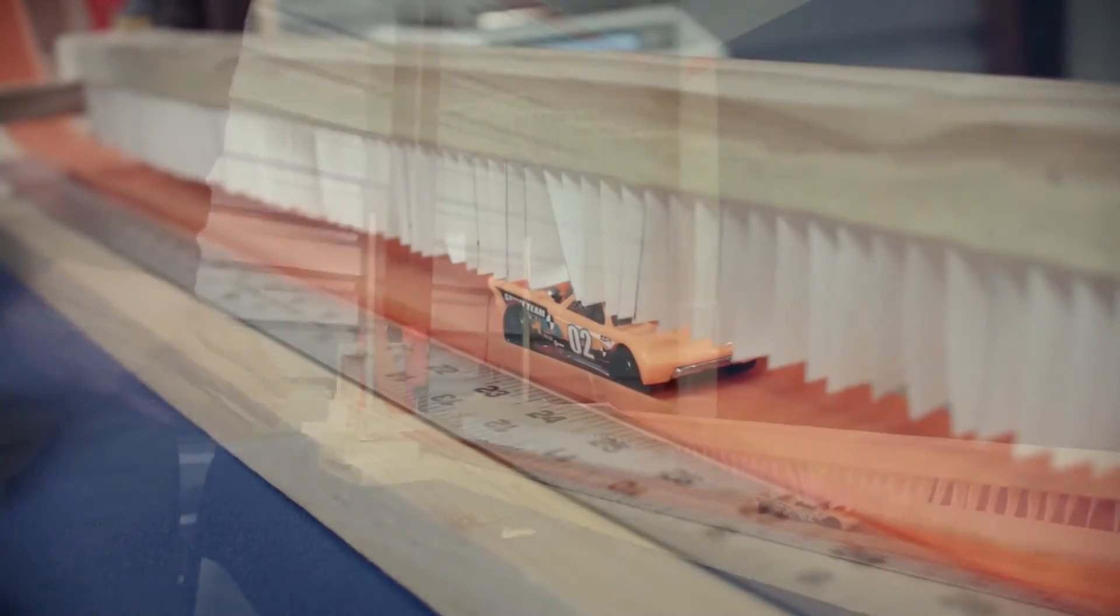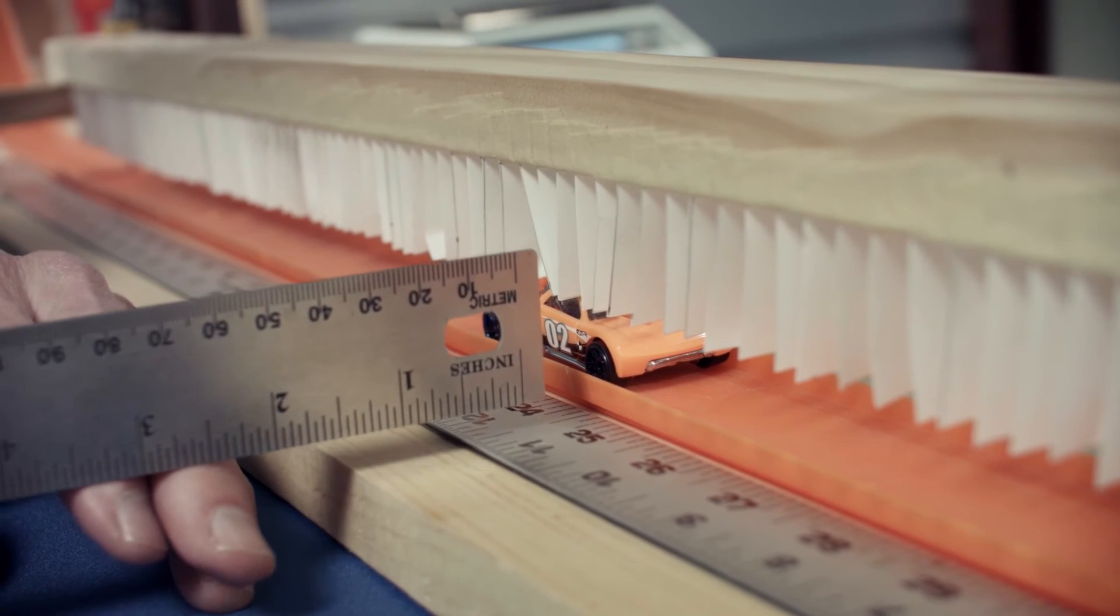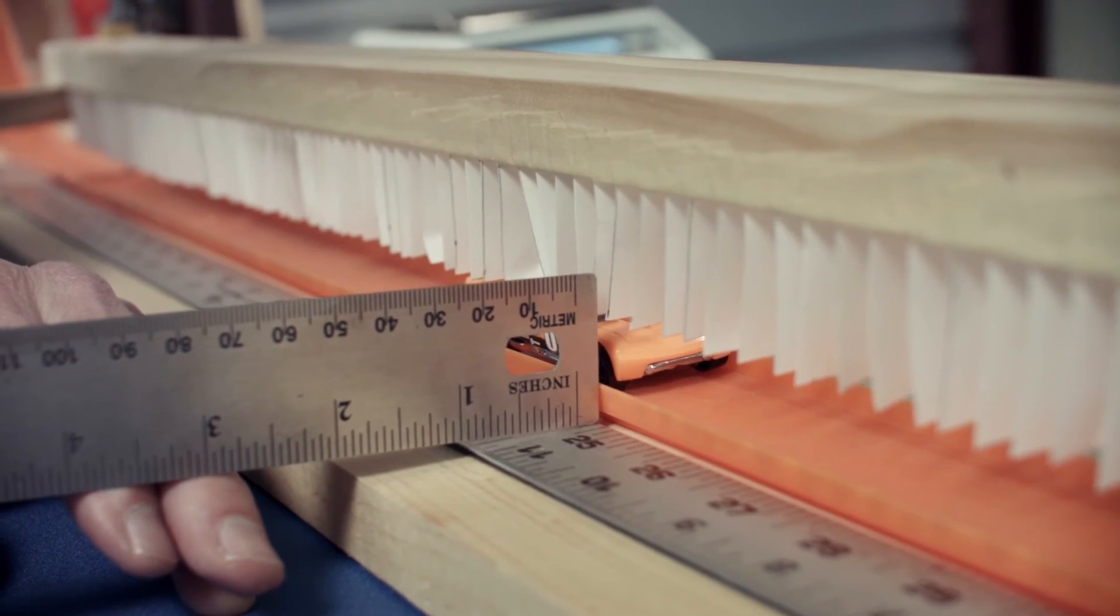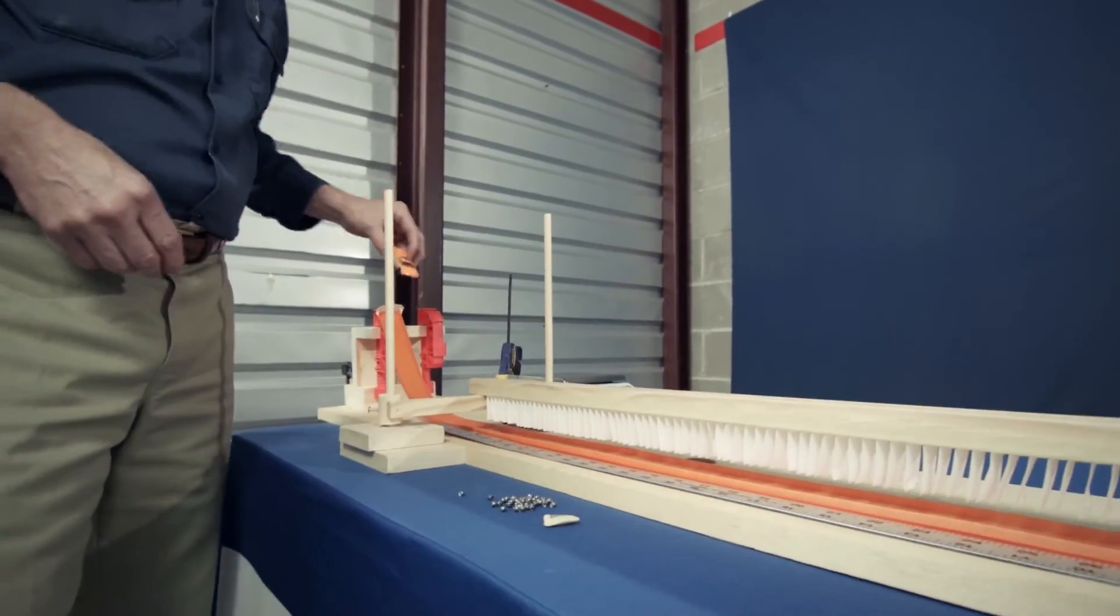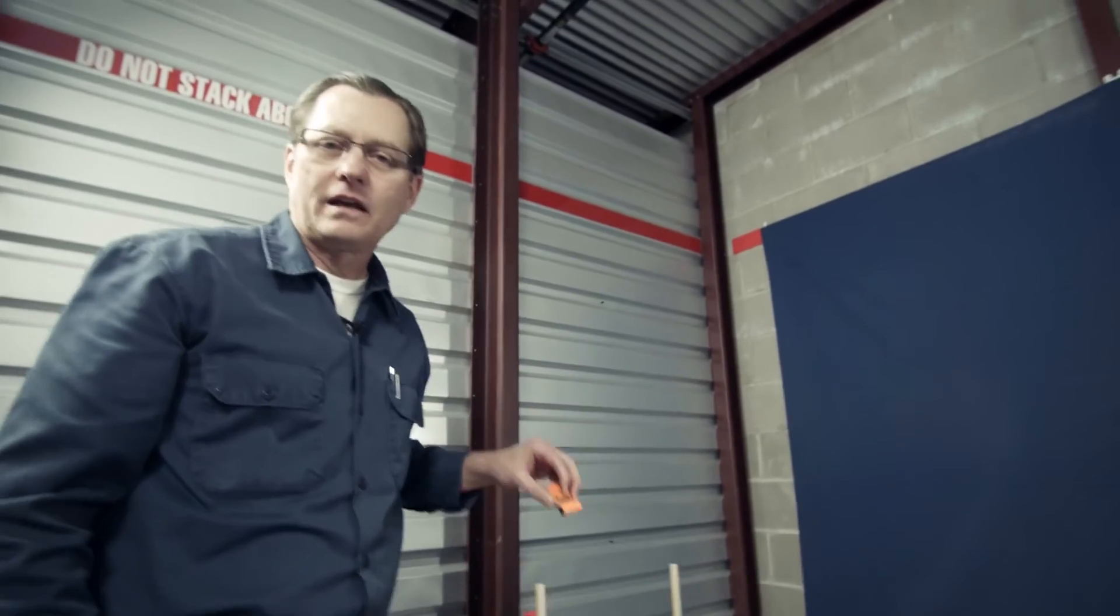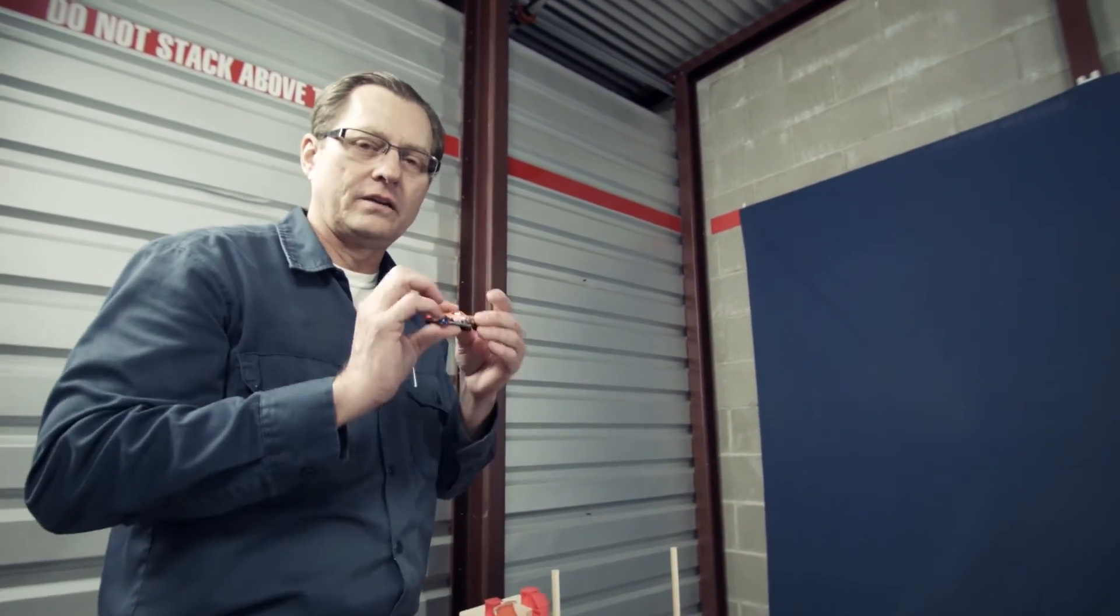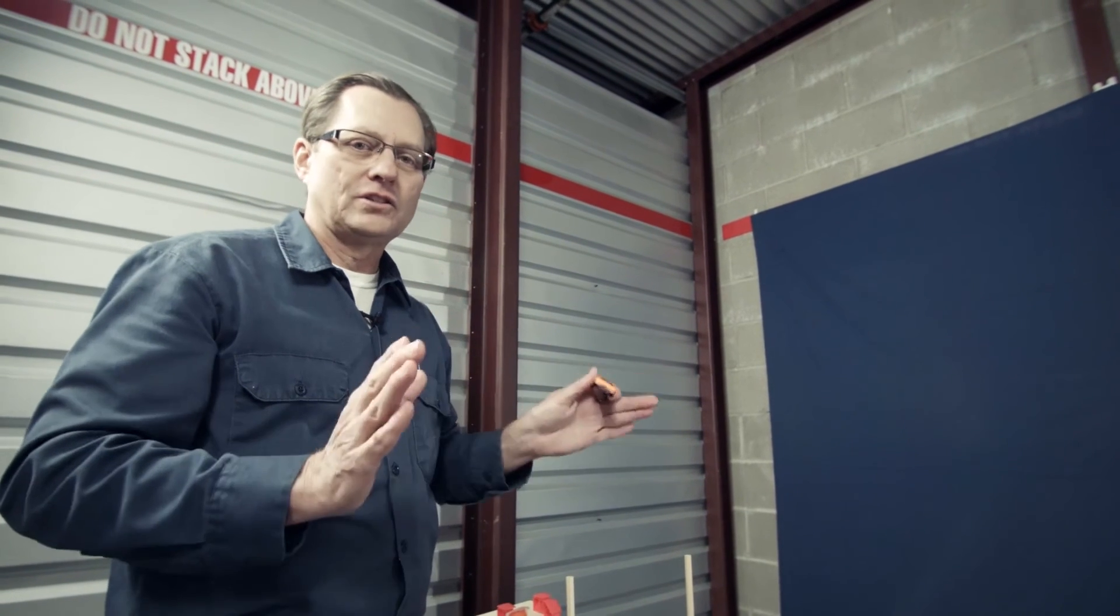And now use the front bumper of the car, measure how far it went, record that distance in the lab journal. With the same weight, do this four or five more times and record all of those stopping distances in the lab journal under that car mass. This is your first set of trials.